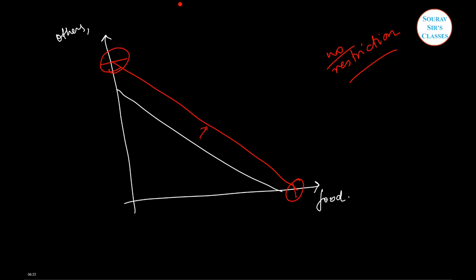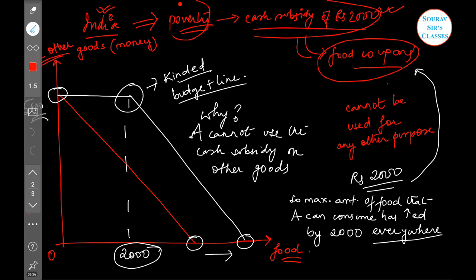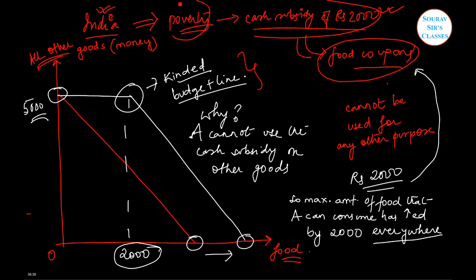Now you can spend this cash subsidy on any particular good. That's why there would have been a parallel shift. But we are actually obtaining a kinked budget line just because of this restriction that it cannot be used for any other purpose.